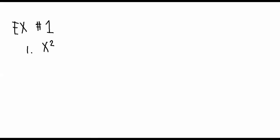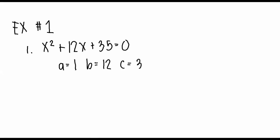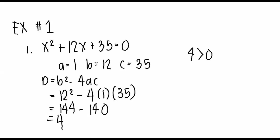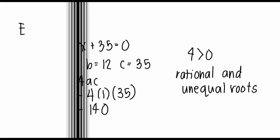We have our example number one: x squared plus 12x plus 35 is equal to zero. We have the values a is equal to 1, b is equal to 12, and c is equal to 35. For our discriminant, we have 12 squared minus 4 times 1 times 35, which will become 144 minus 140, equal to 4. Since 4 is greater than zero and is a perfect square, the roots are rational and unequal.